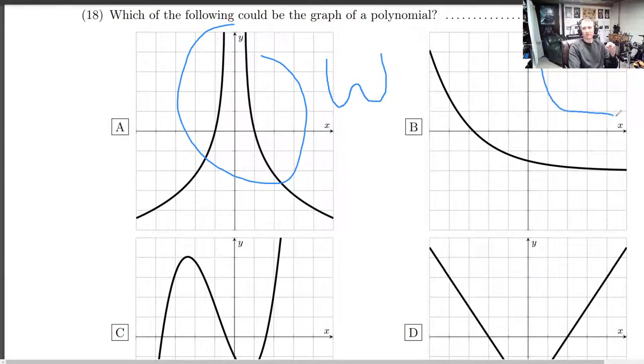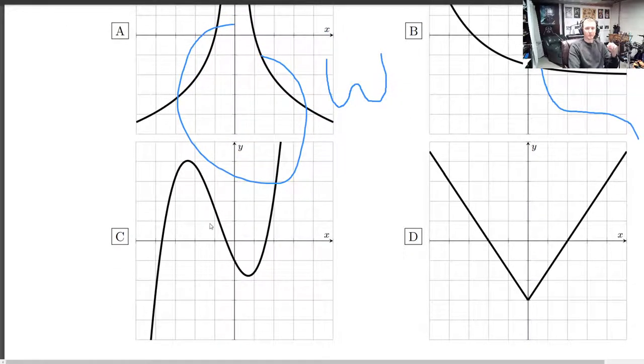This could be. It could just look like that. This one could be. It could just be like that. This one can't be.